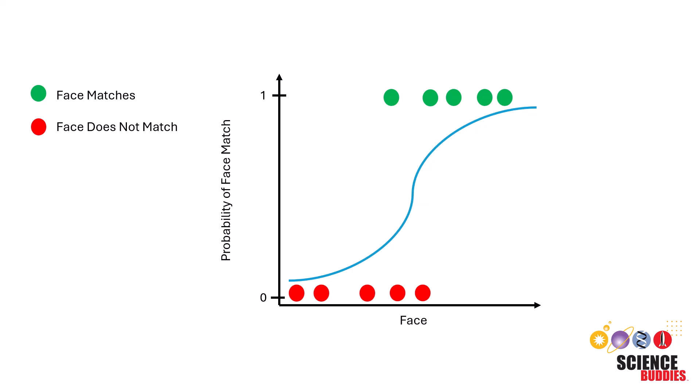Similarly, we can choose a point up here and go directly down until it reaches the activation function. Go directly left and we can see this point has a roughly 0.8 or 80% probability that it matches the one in the system.